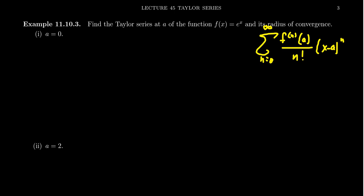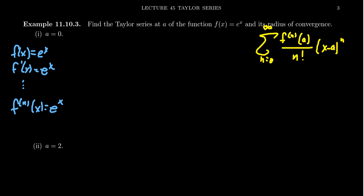Now let's apply this to e to the x. The function e to the x is great because we can predict what its higher derivatives are going to be. If f of x equals e to the x, then the first derivative is also e to the x, and in fact all derivatives of e to the x are likewise e to the x. So if we evaluate these derivatives at the center zero, we get e to the zero, which is always equal to one.